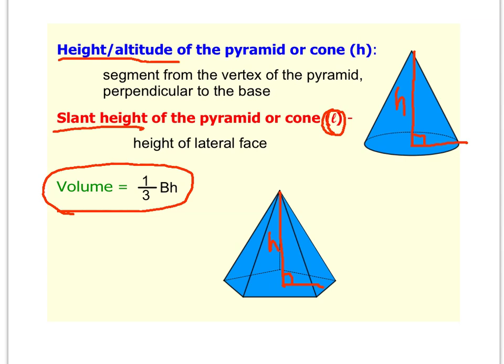If you look at the lateral face of a pyramid, I'm going to just change colors here. So this pyramid has a triangular lateral face. And L, the slant height, would be the height of that pyramid.